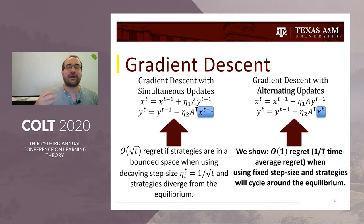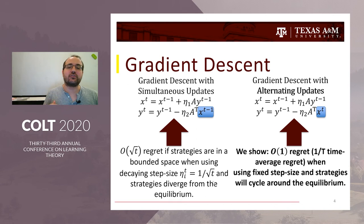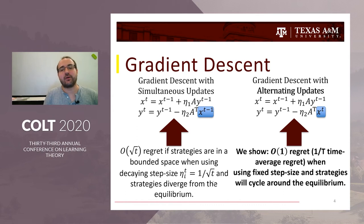We're going to overcome both of these negative properties by changing the implementation of gradient descent. Instead of updating strategies simultaneously, agents are going to take turns. Agent one will update x_t first, and then after seeing agent one's update, agent two will update y_t accordingly. This is what leads to 1 over t time average regret with arbitrary step size and cycles in zero-sum games.